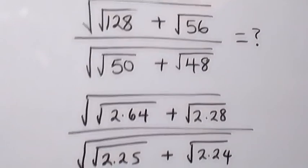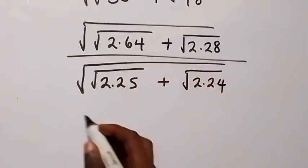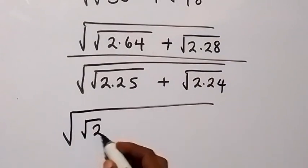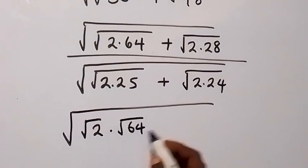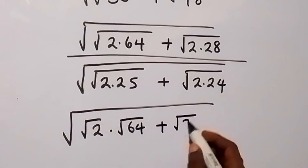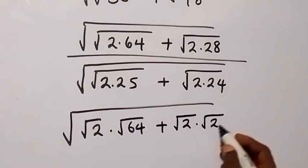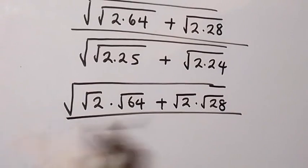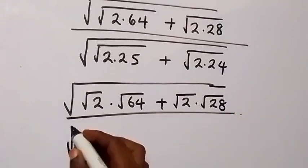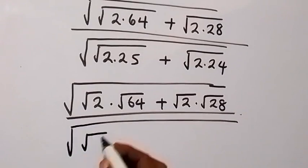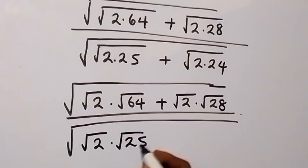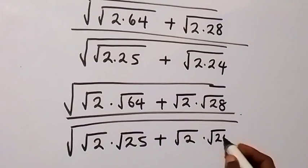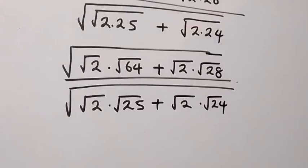In the next step we can separate these, and this can be written as square root of root 2 times root 64, then plus root 2 times root 28. And divided by — here also we can separate this — and this will give us square root of root 2 times root 25, then plus root 2 times root 24.